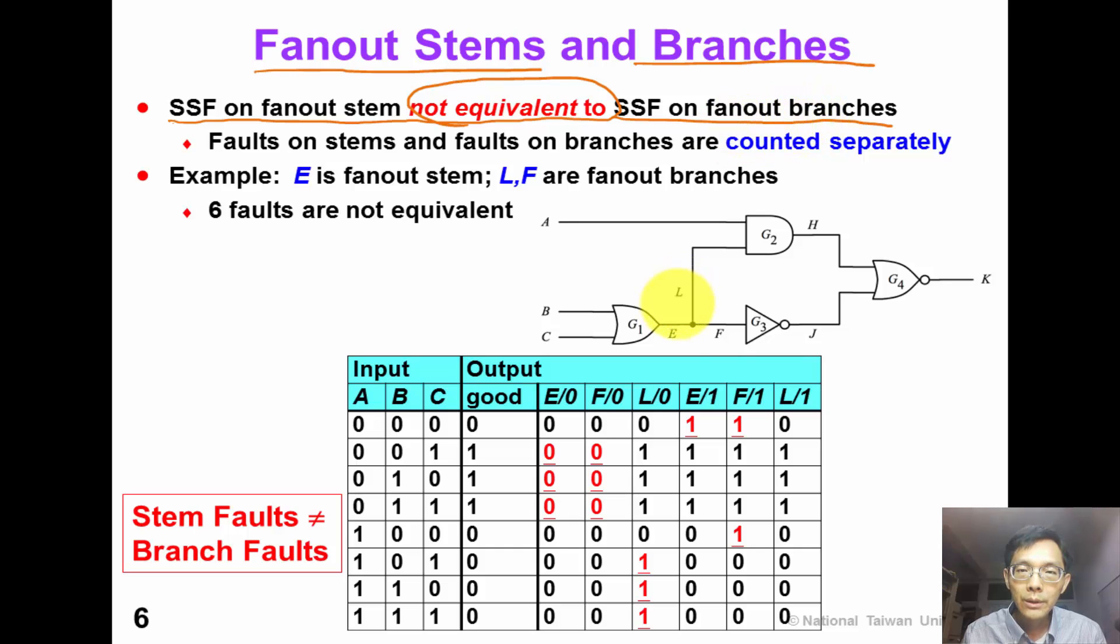For example, in this circuit, we have one fan-out stem, node E. L and F are its fan-out branches. This table shows 8 input combinations for A, B and C. This column shows the output good values.